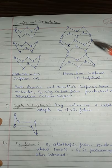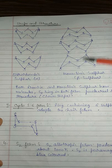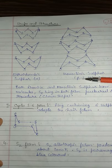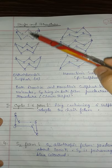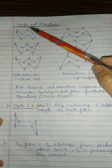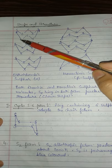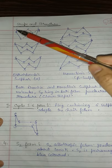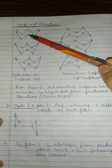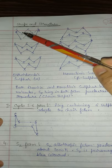The structure of both alpha and beta sulfur consists of puckered ring or crown structures. Both are made of S8 molecules — a crown-shaped ring containing eight sulfur atoms.